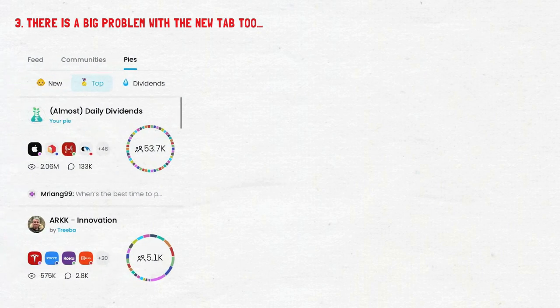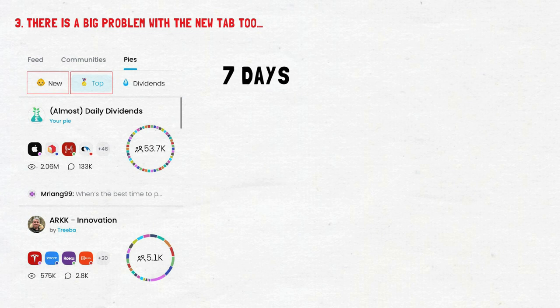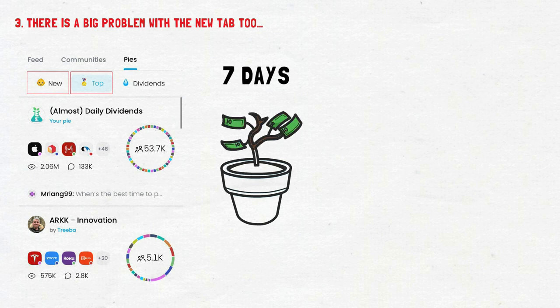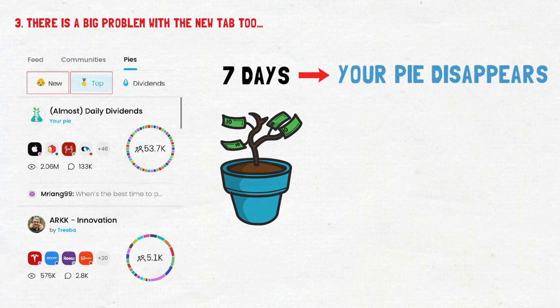Point 3: there is a big problem with the new tab too. Many new users searching for a Pie may look at the top tab, see they're mostly abandoned, and then try the new tab. But as a Pie creator you only have 7 days to get as many people as possible to invest in your Pie before it essentially vanishes into the abyss forever. The algorithm on the new tab favours things that promise high returns or high dividends — with no consideration of whether they're safe dividends — and once those 7 days are over, your Pie disappears and will never get enough views to touch the top Pies. This means some very irresponsible investing Pies are promoted in the new tab, and the owner is likely to just give up after 7 days anyway.